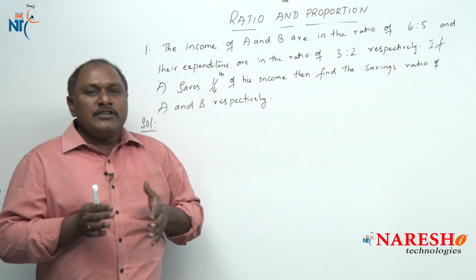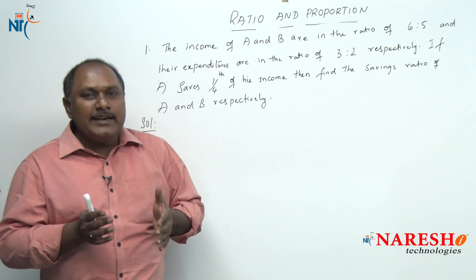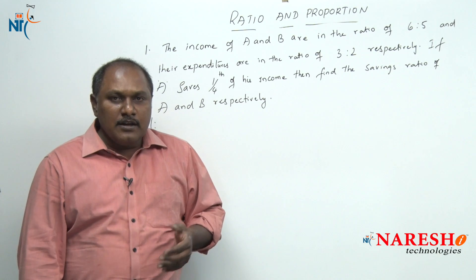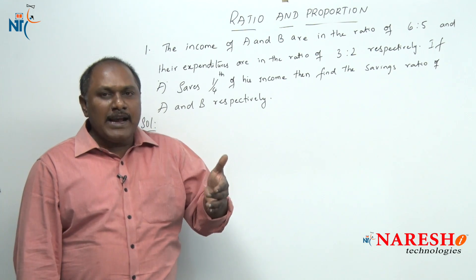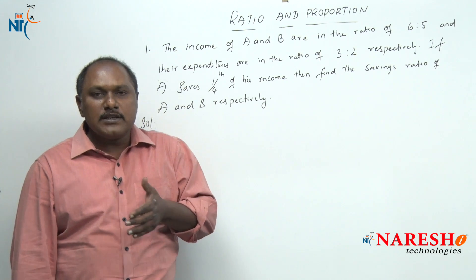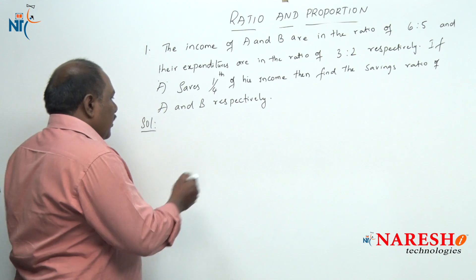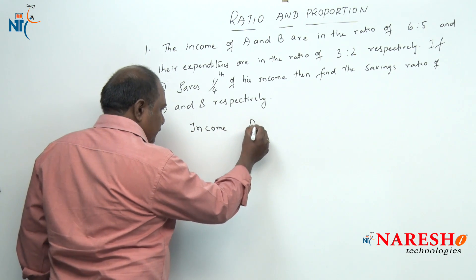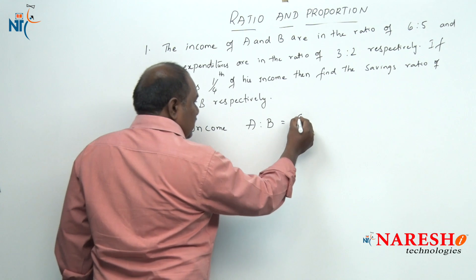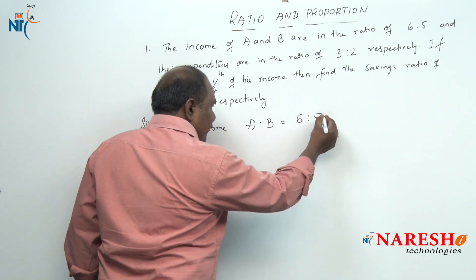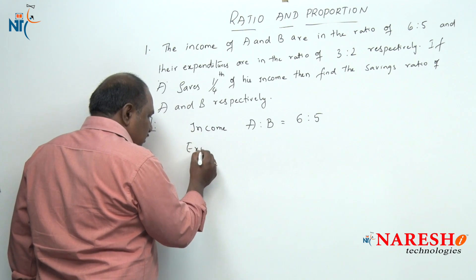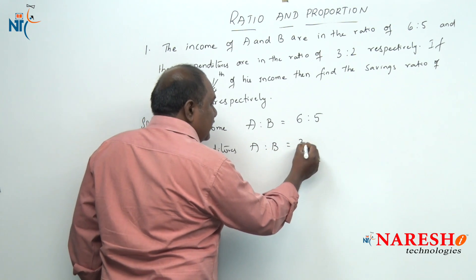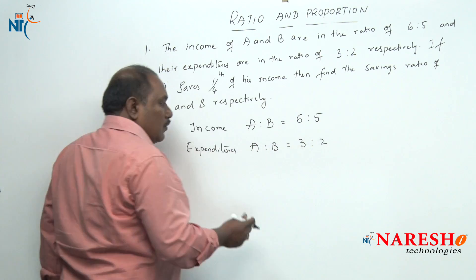What is the relation between these 3 terms — income, expenditure, and savings? We know that income minus expenditure gives us savings. The income ratio of A and B is given as 6 is to 5, and their expenditures are in the ratio of 3 is to 2 respectively.